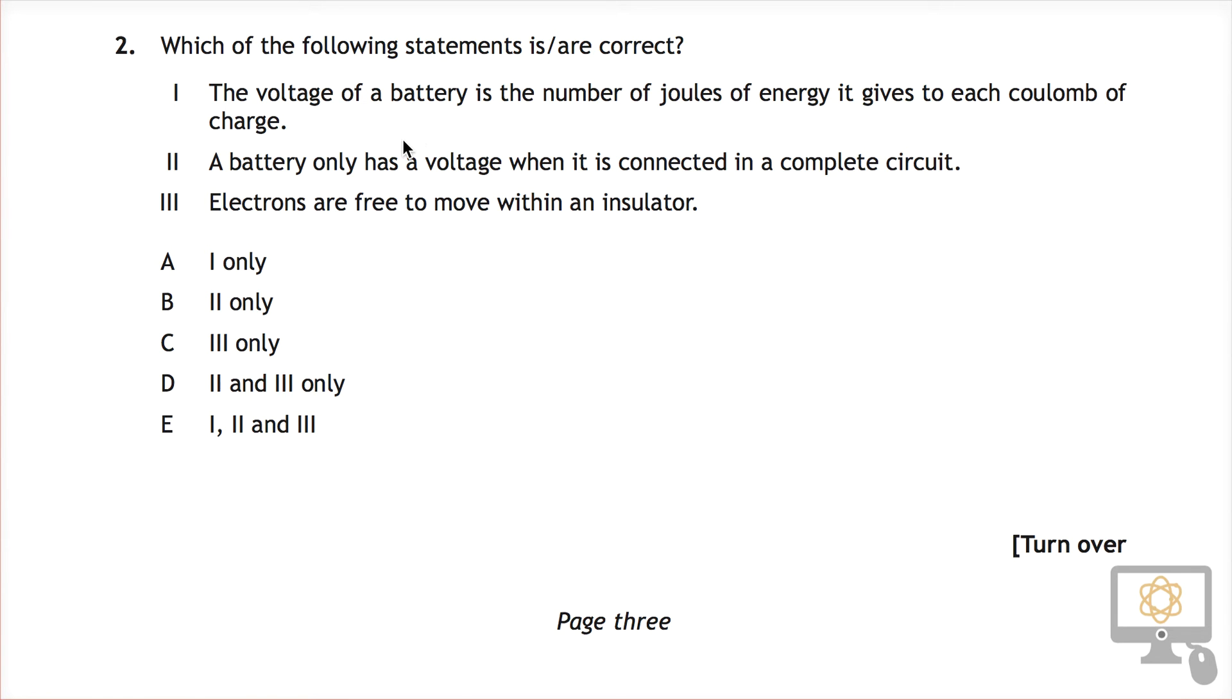It's all about electricity and particularly relating to batteries. Statement one says the voltage of a battery is the number of joules of energy given to each coulomb of charge. We know that is correct and one volt is equivalent to one joule per coulomb, which means if we have a battery which has got one volt, then if a coulomb of charge passes through that battery it will gain one joule of energy. So statement one is correct.